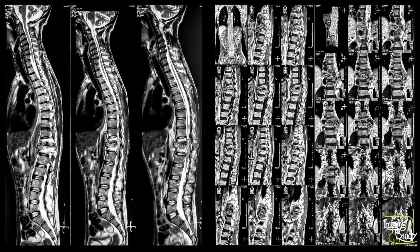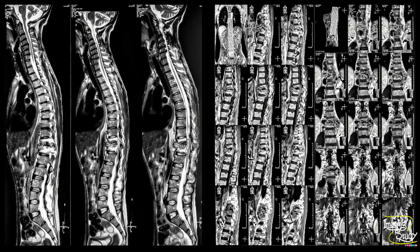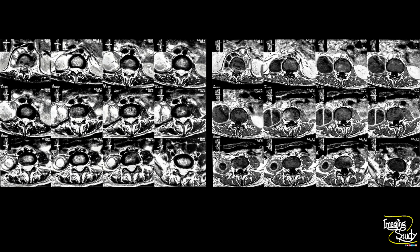This patient came to us for a lumbosacral MRI scan where we found features of tuberculosis spondylodiscitis with pre- and paravertebral and epidural abscess involving the lower dorsal and upper lumbar spine. We also found a marginal contrast-enhancing thick-walled, T1 hyperintense and T2 hyperintense collection in the right psoas muscle connecting with the intervertebral disc.